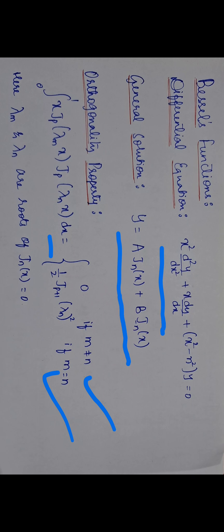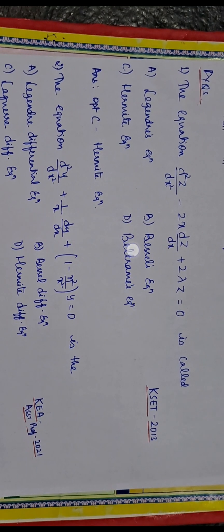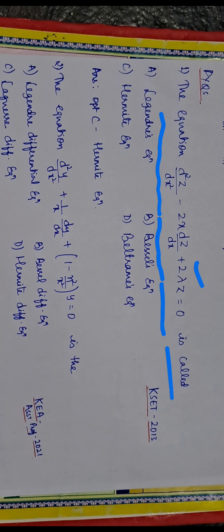These are the important points related to these special functions. Now, here is a question from the 2013 exam: The equation d²z/dx² − 2x dz/dx + 2λz = 0 is called — option a: Legendre's equation, option b: Bessel's equation, option c: Hermite's equation, option d: Beltram's equation.